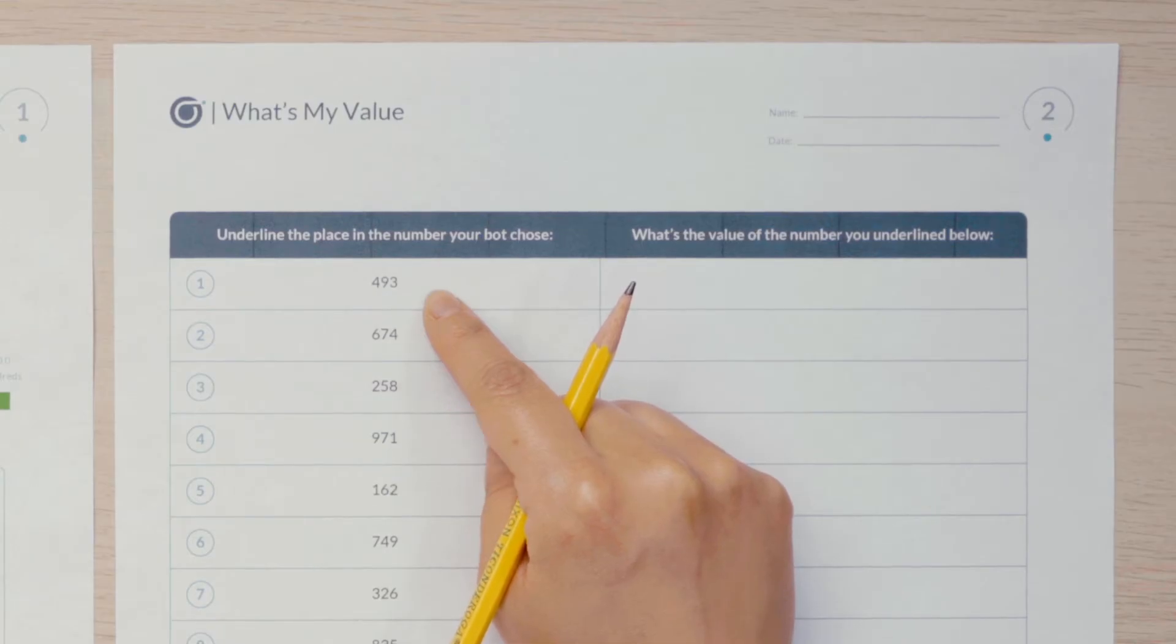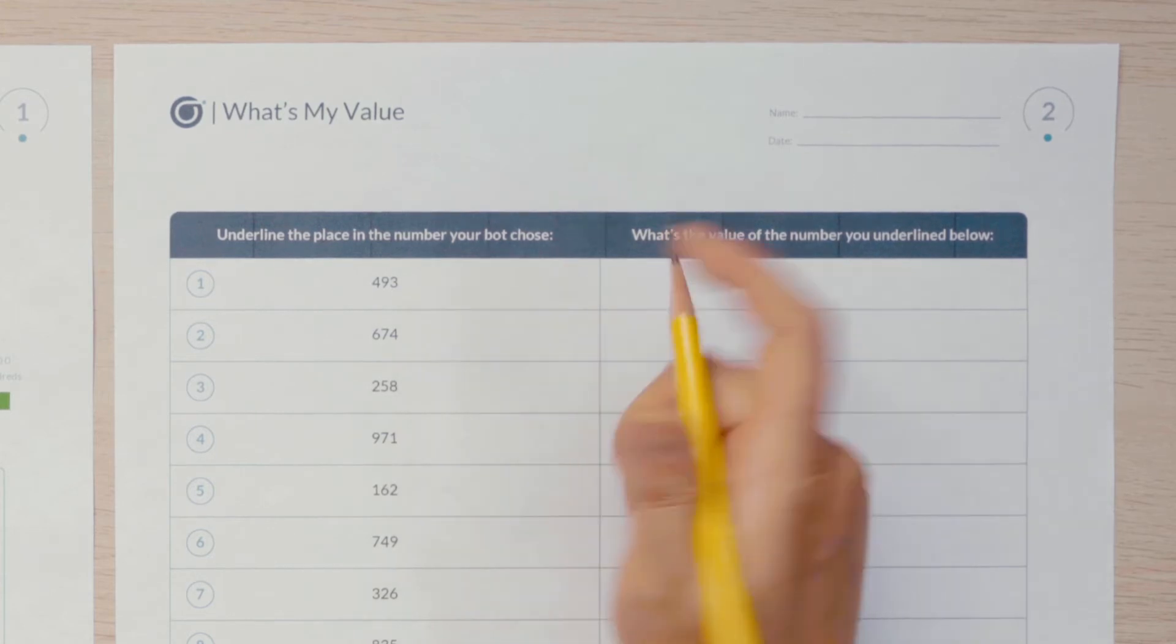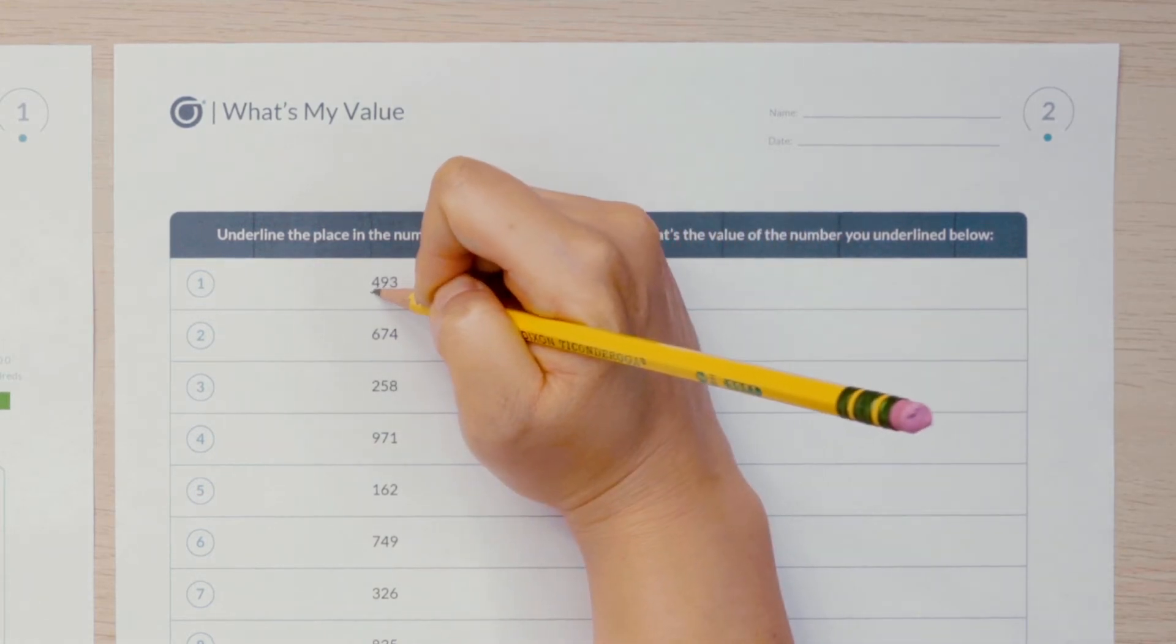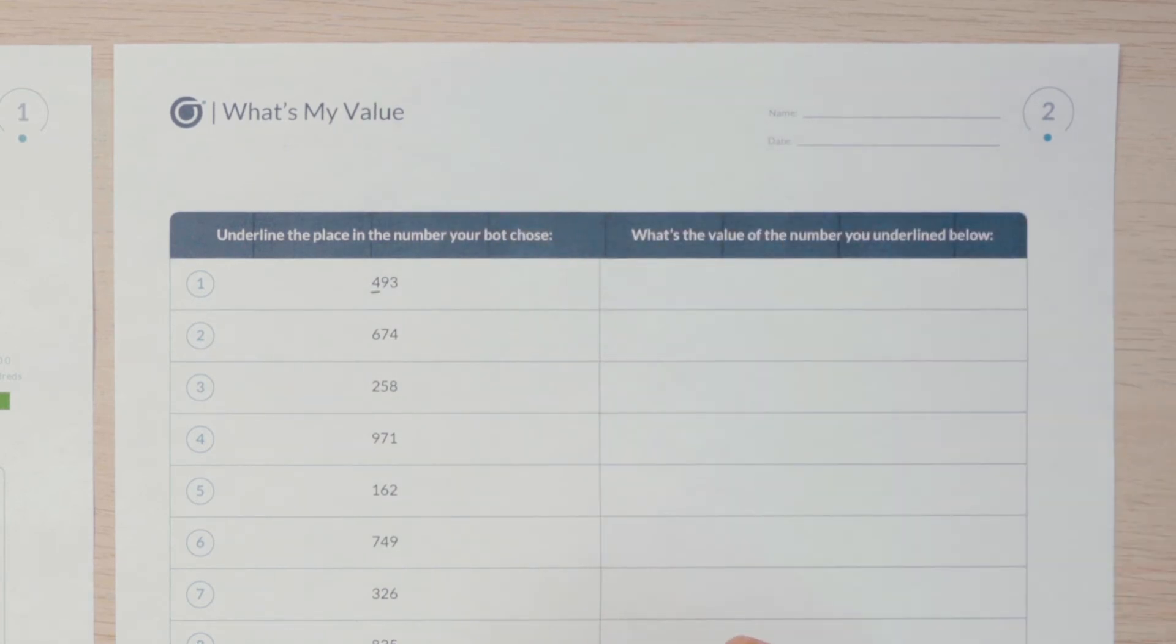Since my bot chose the hundreds place, I am going to find the hundreds place in the number 493 and underline it. I underlined the number 4.